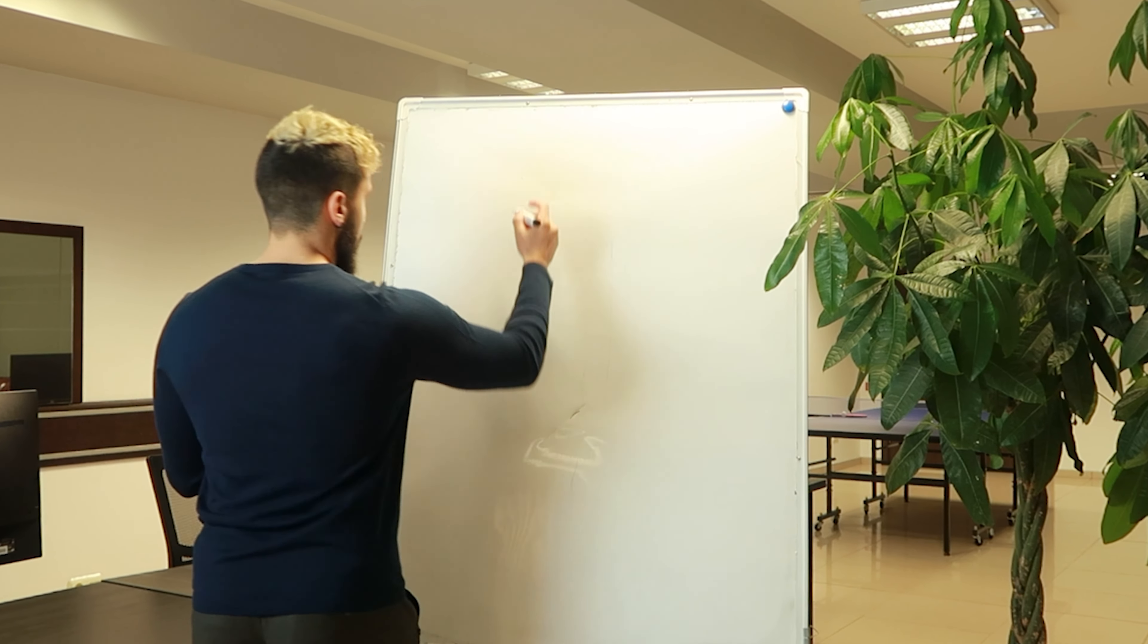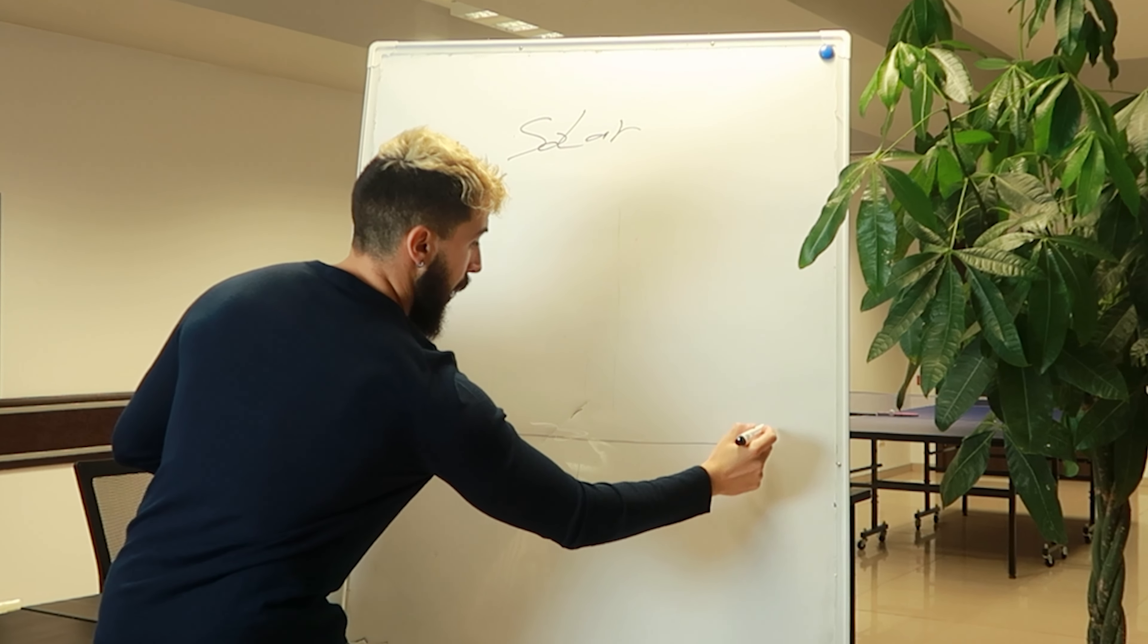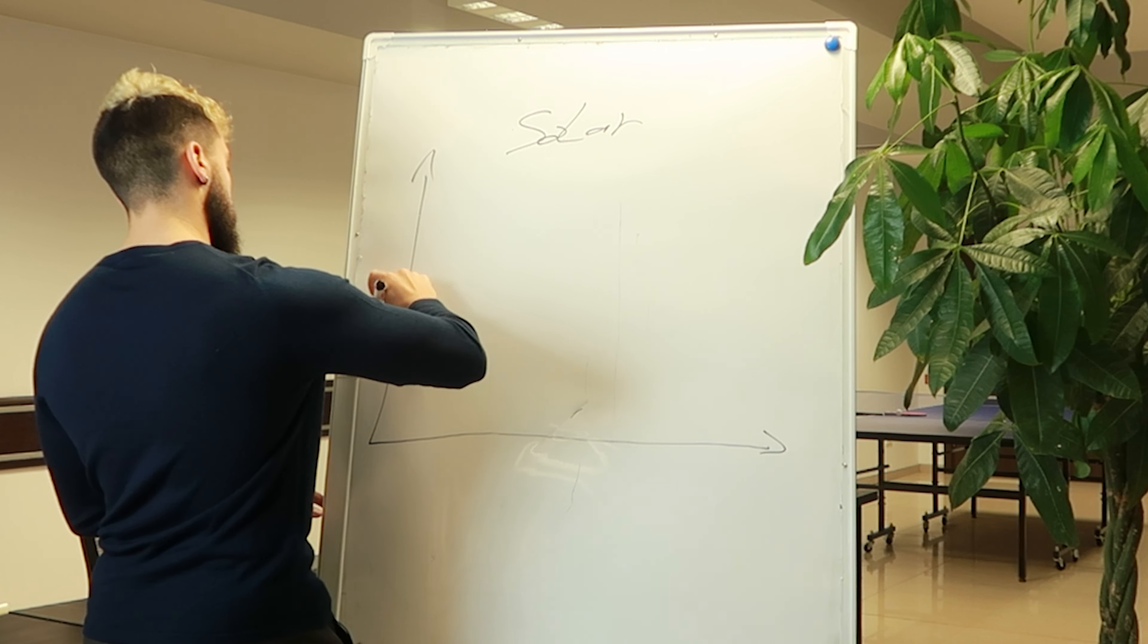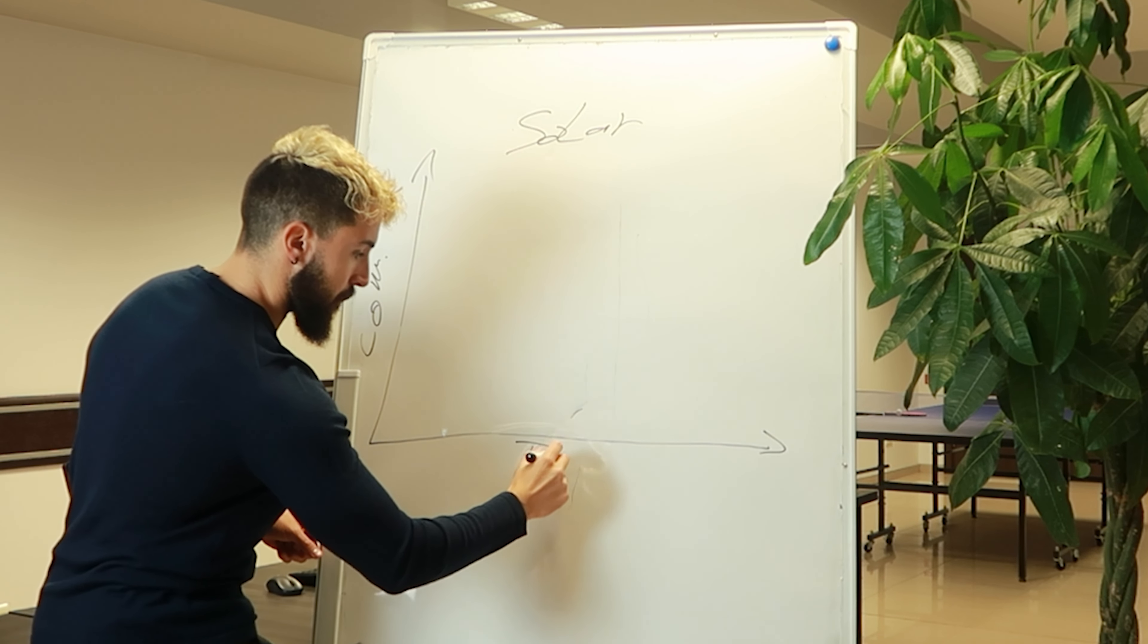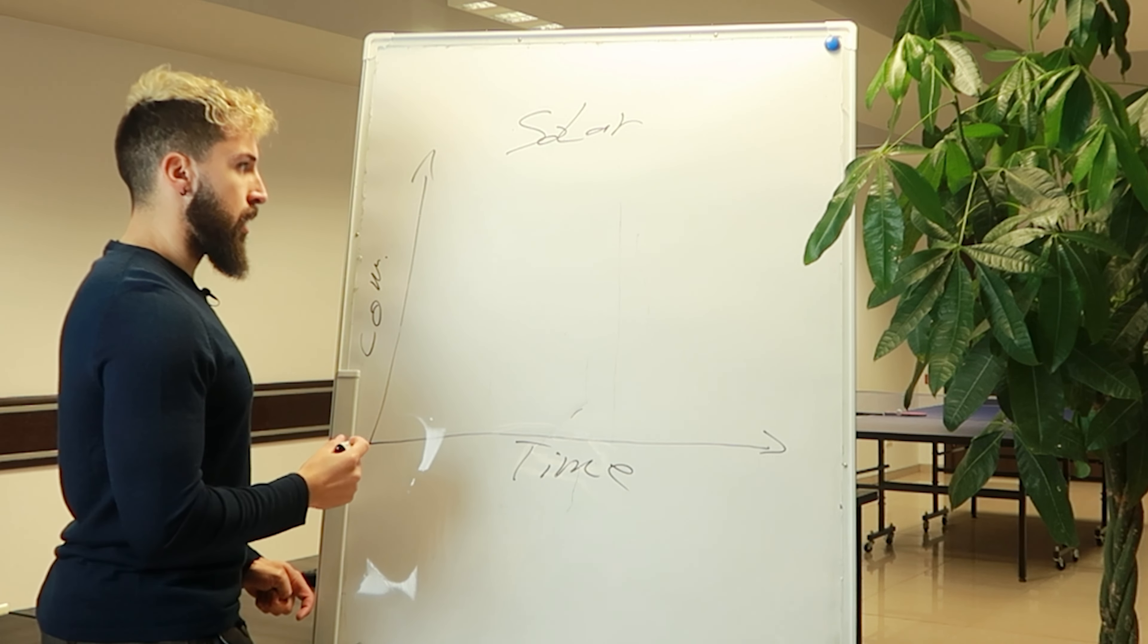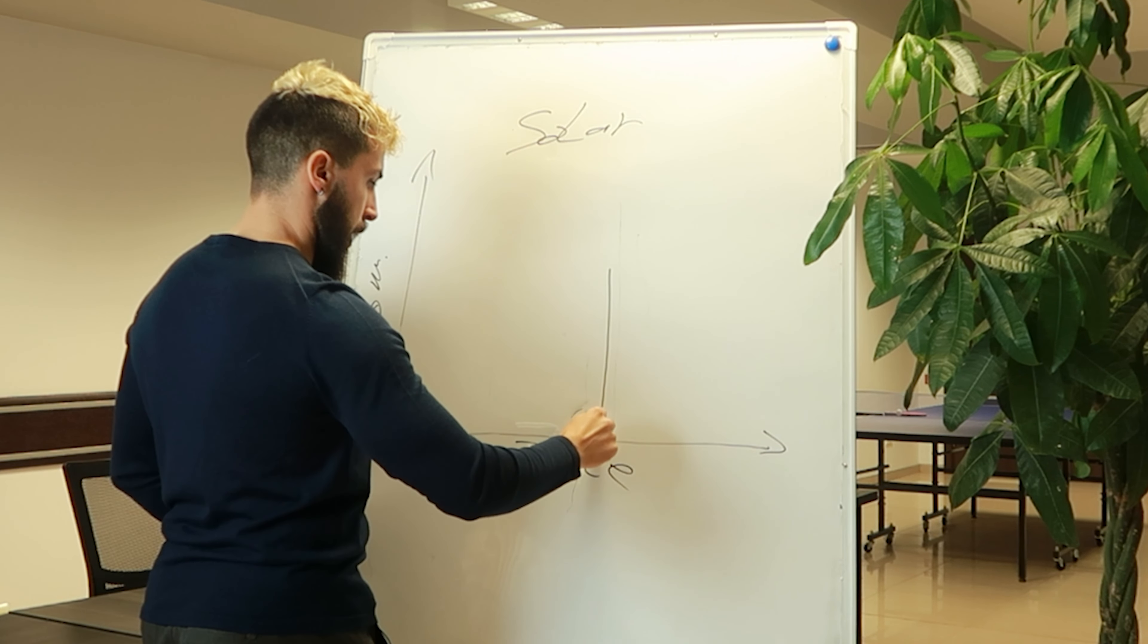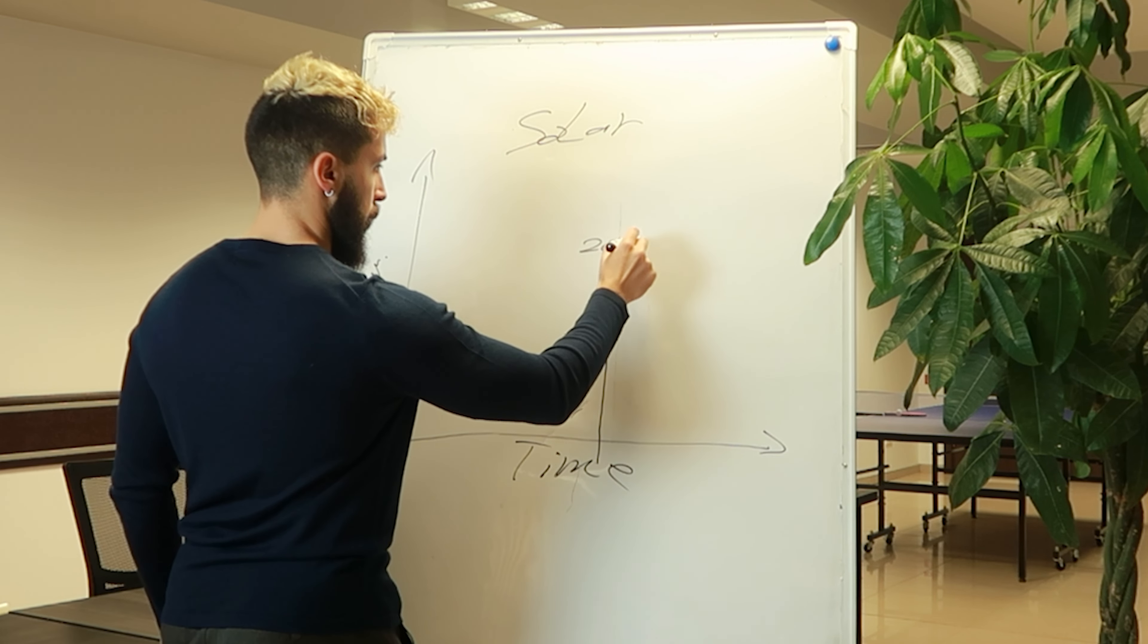So let's say this is solar and this is the graph. Very simple. This is the commission, and this is time. Now let's say that we're about here, we're about here right now. And it's 2022.